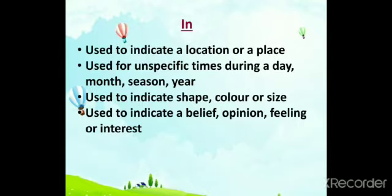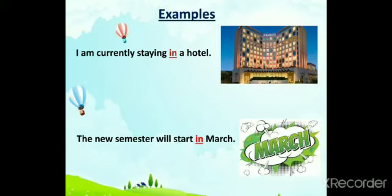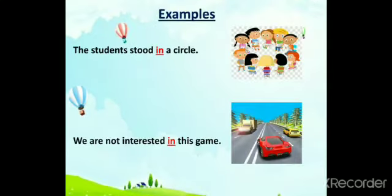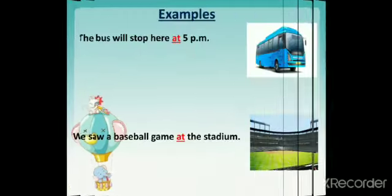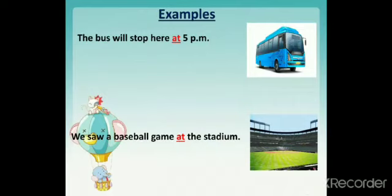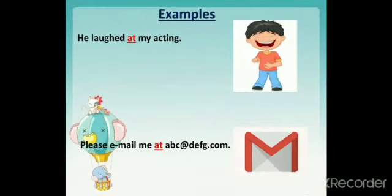'In' is used to indicate a place or location, used for unspecified times during a day, months, seasons, or years, used to indicate shape, color, or size, and used to indicate a belief, opinion, feeling, or interest. Examples: I am currently staying in a hotel. The new semester will start in March. The students stood in a circle. We are not interested in this game. 'At' is used to point out specific time, to indicate a place, to indicate an email address, and to indicate an activity. Examples: The bus will stop here at 5 p.m. We saw a baseball game at the stadium. He laughed at my acting. Please email me at abc@defg.com.